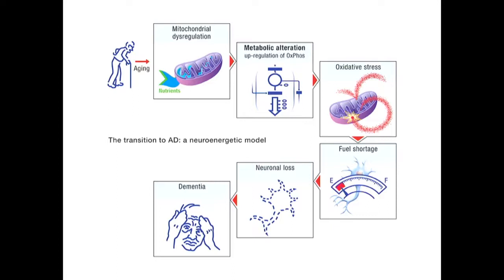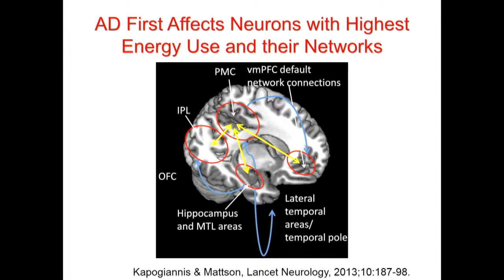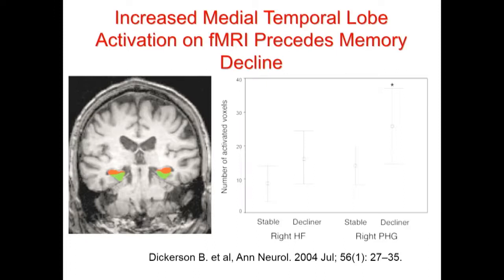There's actually a huge amount of evidence to support this theory, which began with a bunch of mathematical formulas on my whiteboard. Alzheimer's disease and Parkinson's disease begin in the neurons that use the most energy, and spread along networks with other neurons that use the most energy in the brain. Here we have an MRI showing that people who end up declining in their memory had already upregulated their metabolism in the hippocampal area.